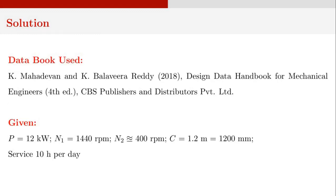The data book used to solve this problem is the one prepared by Mahadevan and Balavir Reddy, published by ZBS Publishers and Distributors Private Limited. The given data are: P, the power is 12kW; N1, the speed of the smaller pulley is 1440 RPM; N2, the speed of the larger pulley is approximately 400 RPM; the center-to-center distance C is 1.2 meters, that is 1200 millimeters; and the service is 10 hours per day.